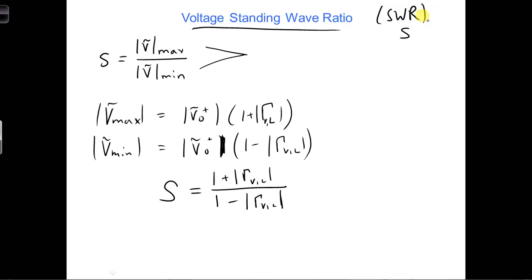The largest VSWR we can get is infinity, which occurs when Vmin is equal to zero. This happens when the reflection coefficient is 1 and all the power is reflected from the load.